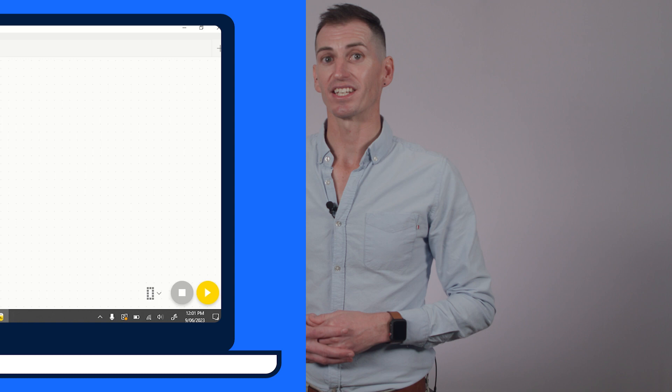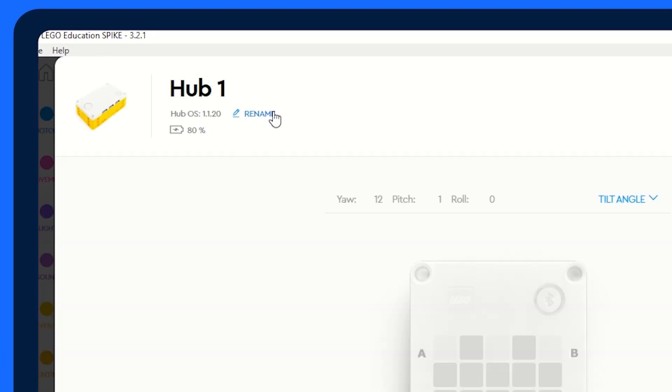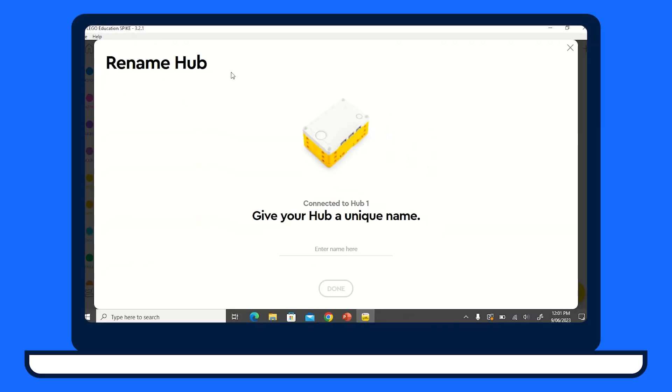Once the device is connected, you can reset the device, alter its name and check its software updates and battery life. You can also update the hub at this time. If your hub is connected to another device, it will need to be disconnected before it will allow connection to a new device. This ensures students do not accidentally connect to their peers' hubs and bump the original connectee off.